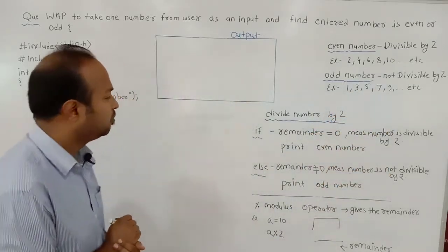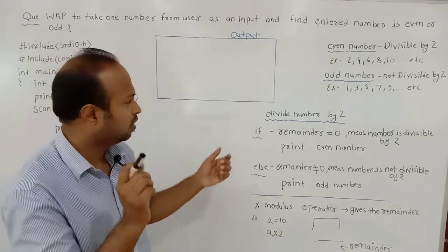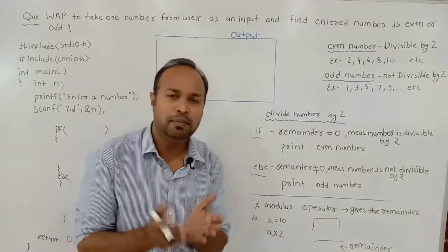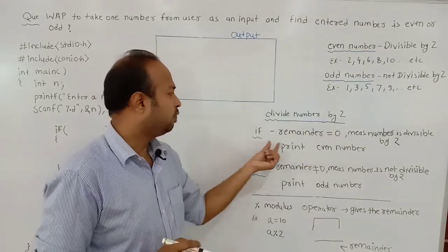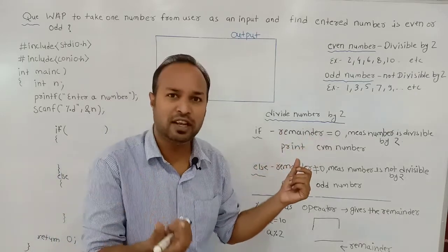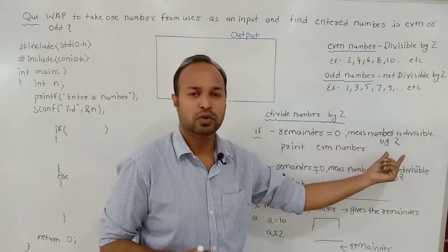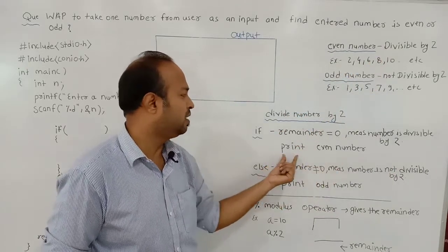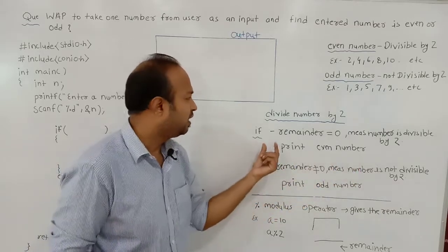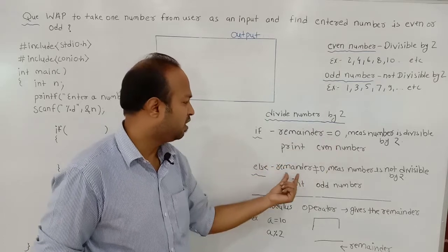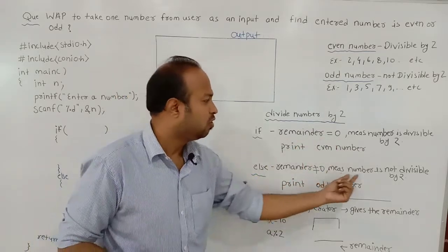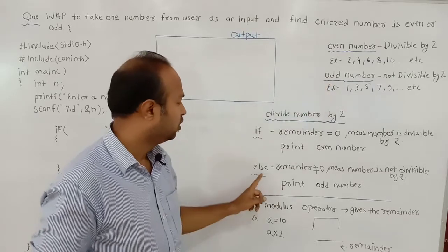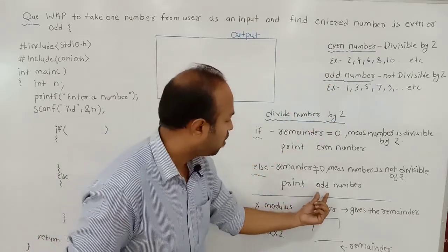How can we write a program to find if a number is even or odd? We simply divide the number by 2. If we get the remainder equal to 0, the number is divisible by 2, and we will print even number in the if part. If the remainder is not equal to 0, the number is not divisible by 2, meaning it is an odd number, and we will print odd number in the else part.